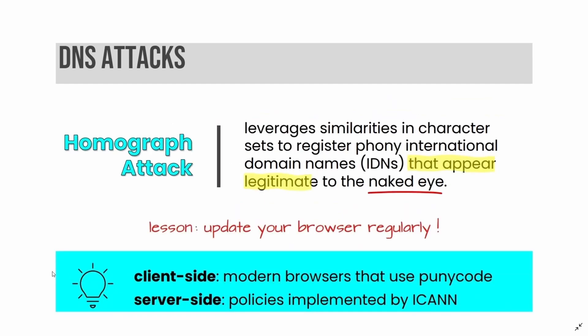Another type of DNS attack is a homograph attack. A homograph attack leverages similarities in character sets to register phony international domain names, also called IDNs, that appear legitimate to the naked eye. To mitigate this risk: update your browser regularly; on the client side, modern browsers that use punycode can stop it; on the server side, use policies implemented by ICANN.